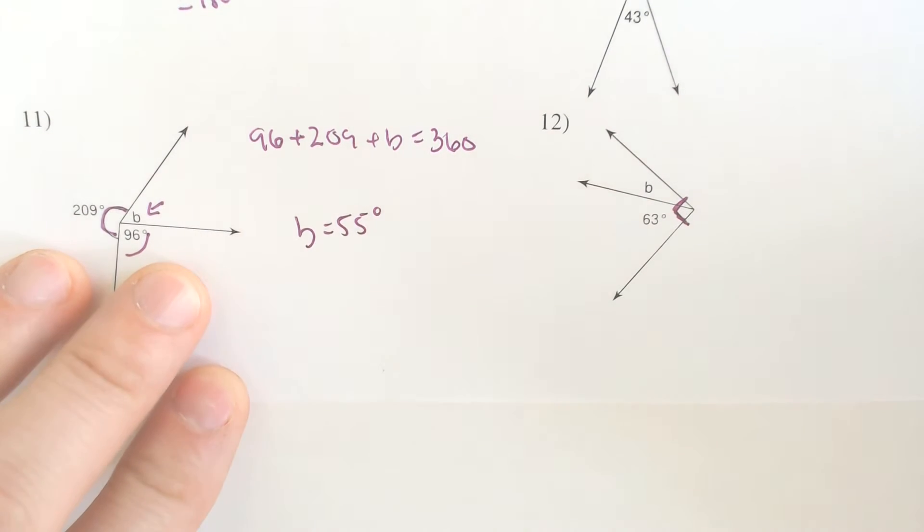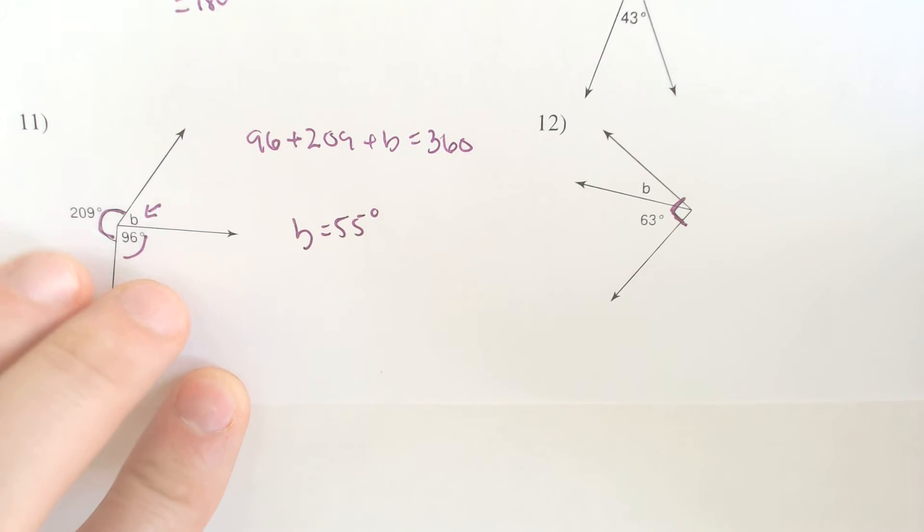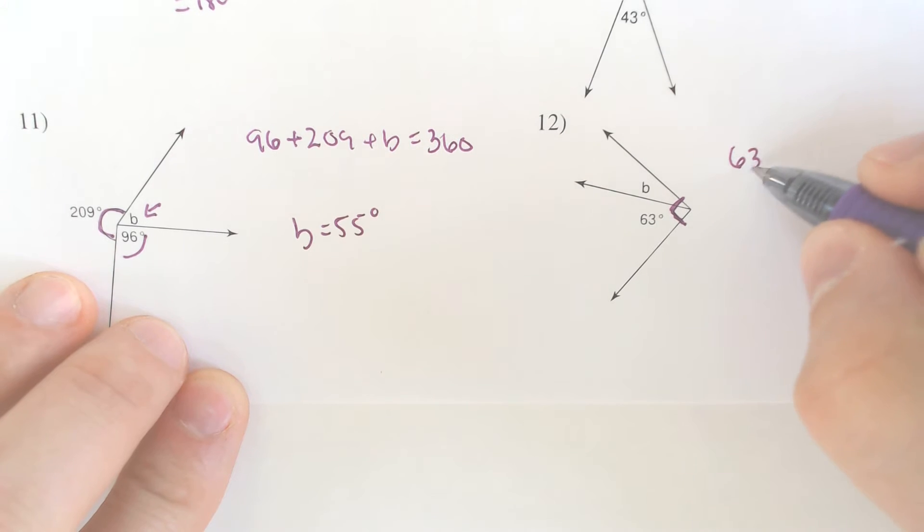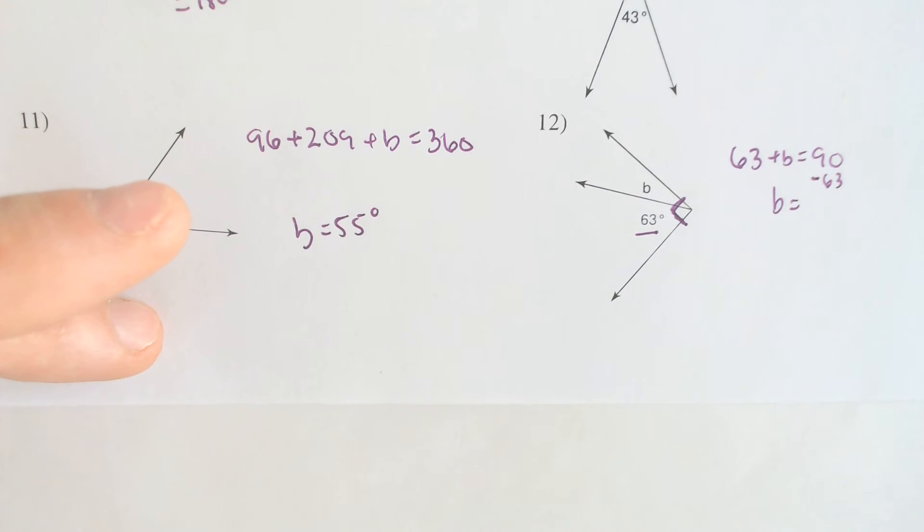This box right here for number 12 indicates that we have a right angle going on, which means that they are complementary. And if they are complementary, you'd be like 63 and B make 90 degrees. Or you could recognize to subtract the 63, which is exactly what we would have to do here to solve, to get an angle of 27 degrees.